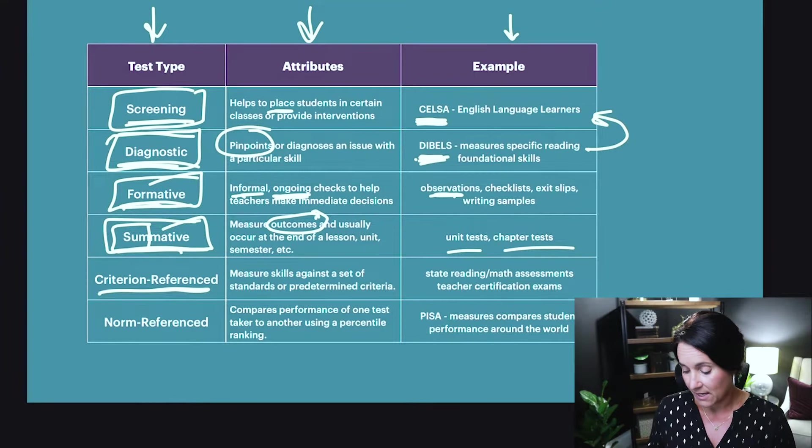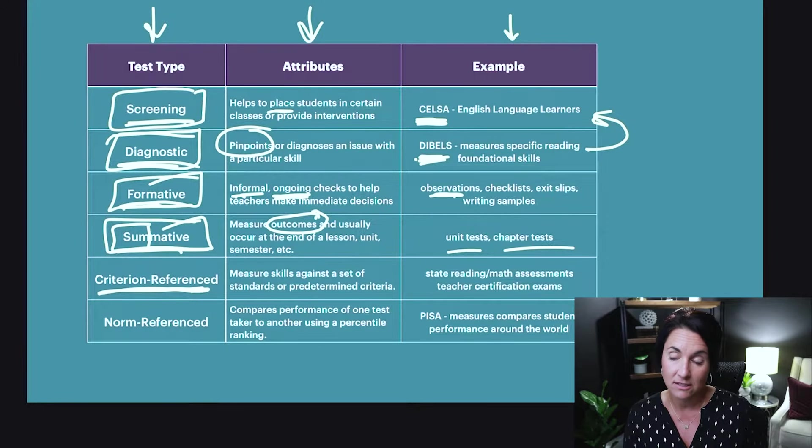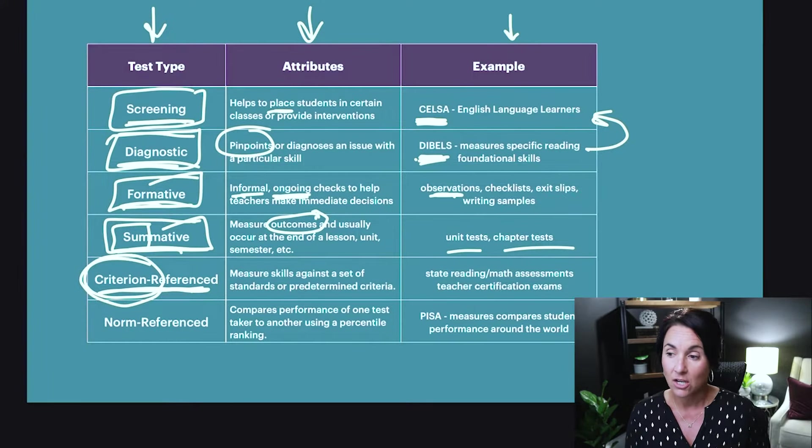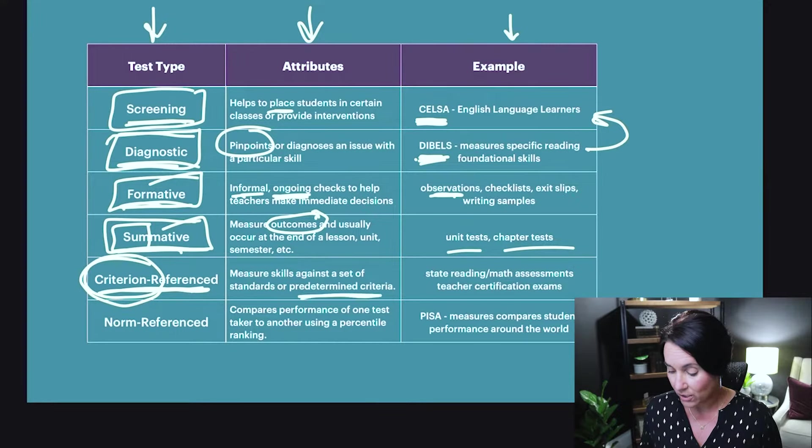Then we have criterion-referenced exams — these are the state standardized tests. Standards are the criteria by which your students are assessed, so there is a pre-determined criteria against which students are measured. Your state reading and math exams are criterion-referenced. Your teacher certification exams are also criterion-referenced because they are built based on teaching standards and your state academic standards. For example, the high school math teacher certification exam is built against state standards for math at grades seven through twelve.